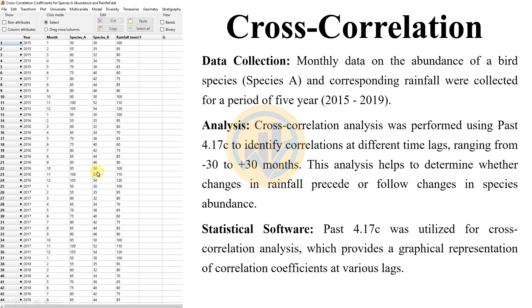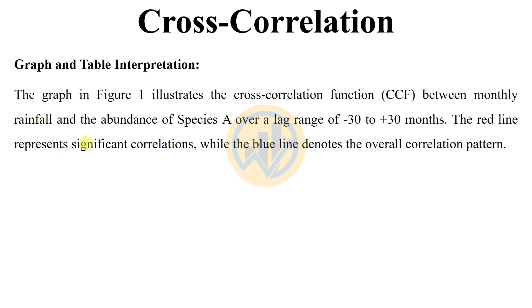The following section covers the graph and table interpretation for cross-correlation. Figure 1 illustrates the cross-correlation function (CCF) between monthly rainfall and the habitat of species A over a lag range of minus 30 to plus 30 months.